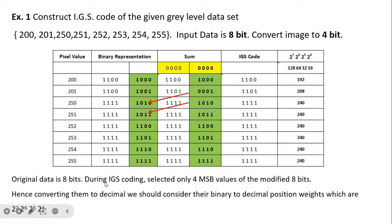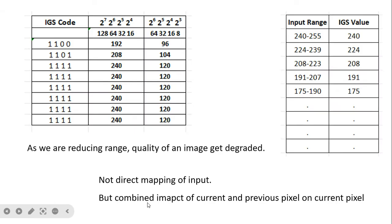The original data is 8-bit. During IGS coding, we select only the 4 MSBs of the modified 8-bit value. When converting to decimal, we use the positional weights 2^7, 2^6, 2^5, and 2^4 to maintain good quality. If we want to compromise on quality, we can use the range 2^6, 2^5, 2^4, 2^3 — giving 64, 32, 16, 8 — but then values from 240 to 255 would be mapped to 120, causing quite significant degradation.